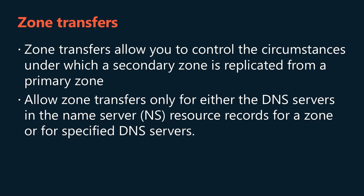Zone transfers allow you to control the circumstances under which a secondary zone is replicated from a primary zone. To improve the security of your DNS infrastructure, allow zone transfers only for either the DNS servers in the name server NS resource records for a zone or for specified DNS servers. If you allow any DNS server to perform a zone transfer, you're potentially allowing internal network information, such as the name and IP address of that important BubbleJet printer, to be transferred to any host that can contact your DNS server.